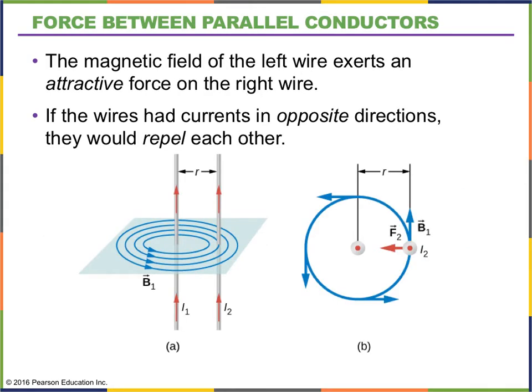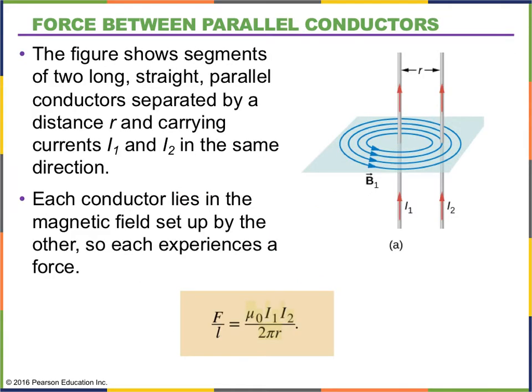Just to remind you, in the last video, we learned why two wires that carry current in the same direction attract each other, and why they will repel each other if the currents run in opposite directions. We found the expression for the force between the two wires could be expressed in force per unit length, because usually we're assuming that our wires are very, very long.